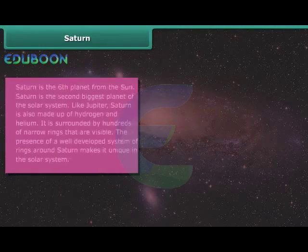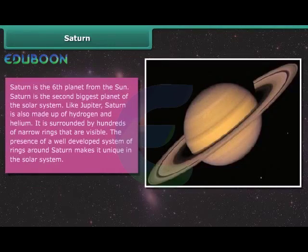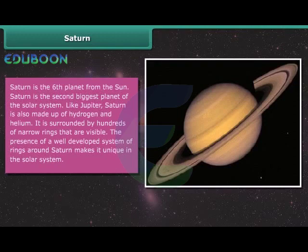Saturn. Saturn is the sixth planet from the Sun. Saturn is the second biggest planet of the solar system. Like Jupiter, Saturn is also made up of hydrogen and helium. It is surrounded by hundreds of narrow rings that are visible. The presence of a well-developed system of rings around Saturn makes it unique in the solar system.